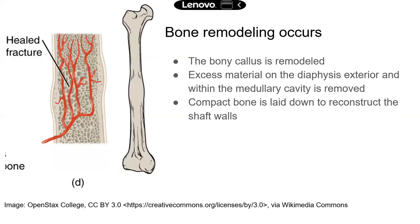Next is bone remodeling, which will continue for several months. The bony callus will be remodeled, and the outcome will be very similar to what the bone looked like before the fracture. During the repair process, there will be some excess material on the diaphysis exterior or in the medullary cavity, and all that excess material will be removed. New compact bone is also laid down to reconstruct the walls of the diaphysis.